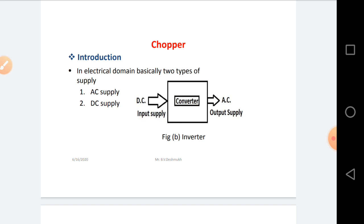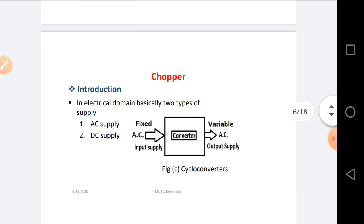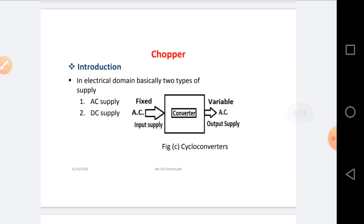If you are considering input as DC supply and output as AC supply, such a type of Converter is called an Inverter circuit. If you are considering fixed AC supply on the input side and variable AC supply on the output side — that is, both input and output are AC but input is fixed and output is variable — such a Converter is called a Cycloconverter.